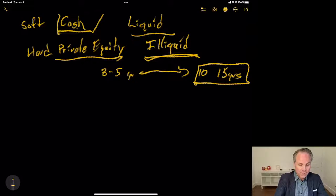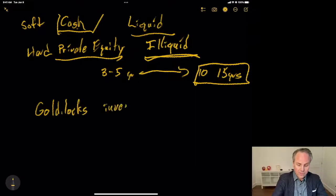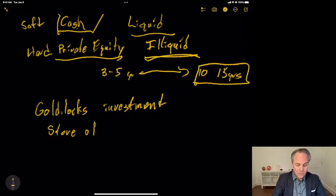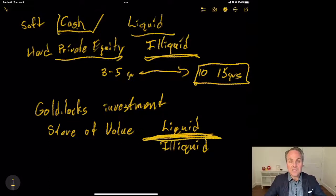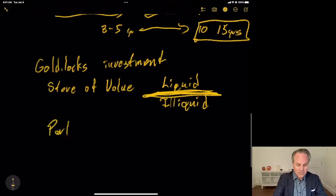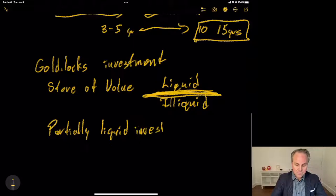Well, now that we're bringing up Goldilocks, she needs a Goldilocks investment. She needs to find a store of value that's not too liquid that she spends it all, and not so illiquid that she just has absolutely no access to it when she needs it. So she needs that middle ground between a liquid investment and an illiquid investment. She needs a partially liquid investment.